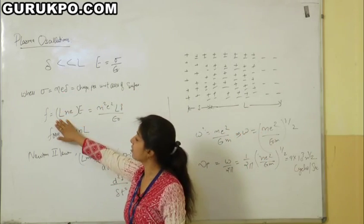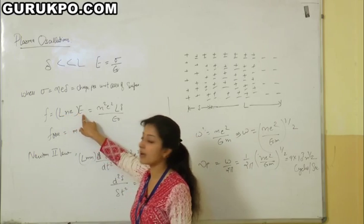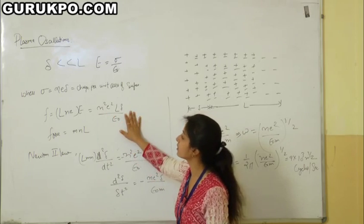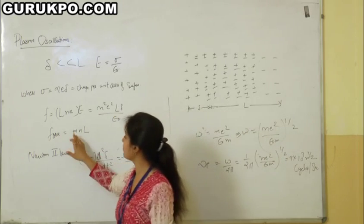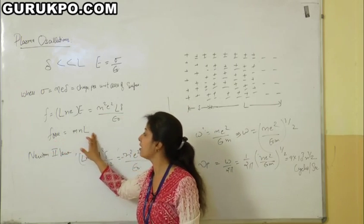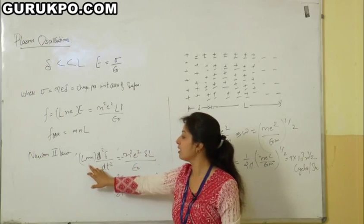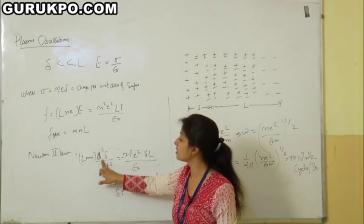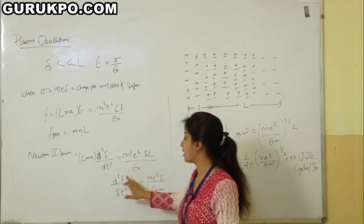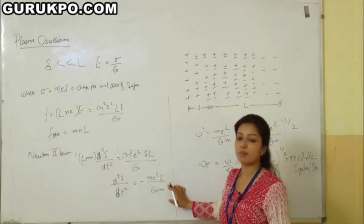The force acting on the electrons equals the charge density multiplied by the electric field strength, that is l·n·e multiplied by E, which equals n²·e²·l·del upon epsilon naught. According to Newton's second law, the equation of motion will be l·m·n into d²del/dt² equals minus n²·e²·del·l upon epsilon naught. This simplifies to d²del/dt² equals minus n·e²·del upon epsilon naught·m.